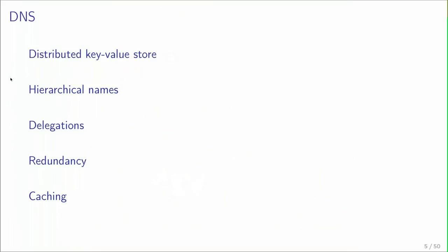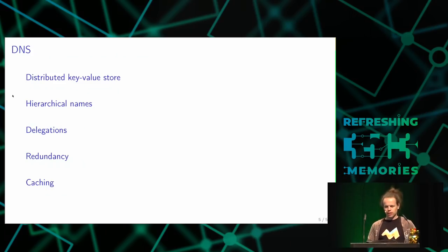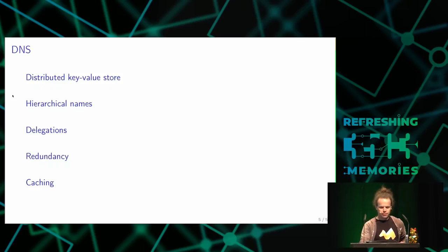DNS, in other terms, is a distributed key-value store which has been standardized and specified 30 years ago. It uses a hierarchical name system and delegations to achieve decentralization. It has built-in redundancy and built-in caching in the protocol itself.